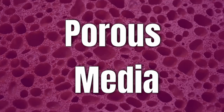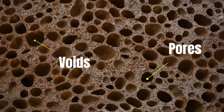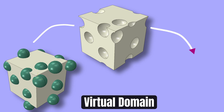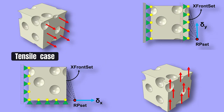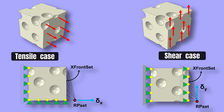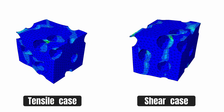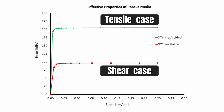A porous media is essentially a material that contains pores — in other words, materials that have voids in them. In this video, I will show you how to create a virtual domain of such porous media. I will also show you how to undertake representative volume element modeling of such porous media, as well as generate stress and strain plots for these materials.